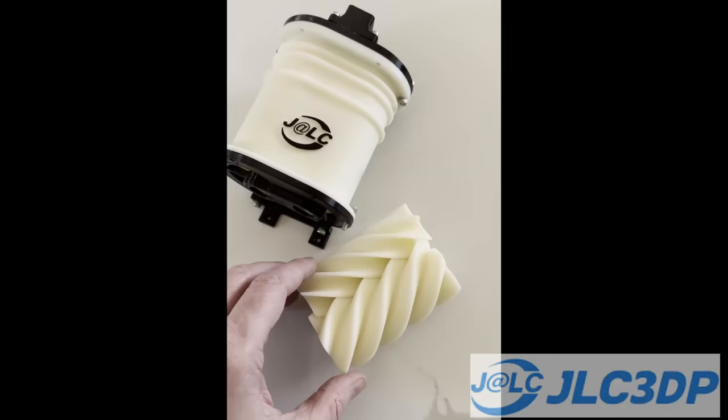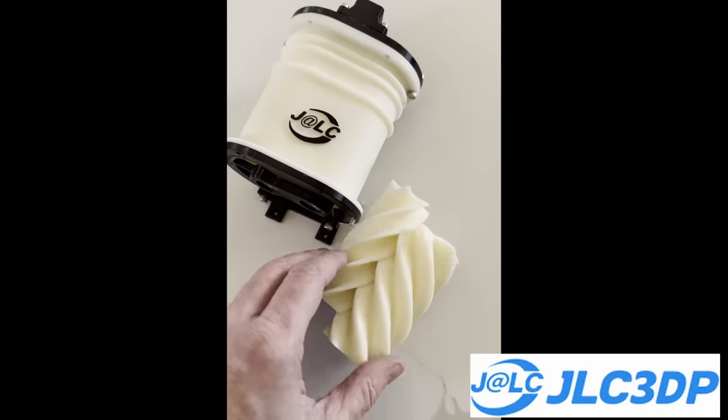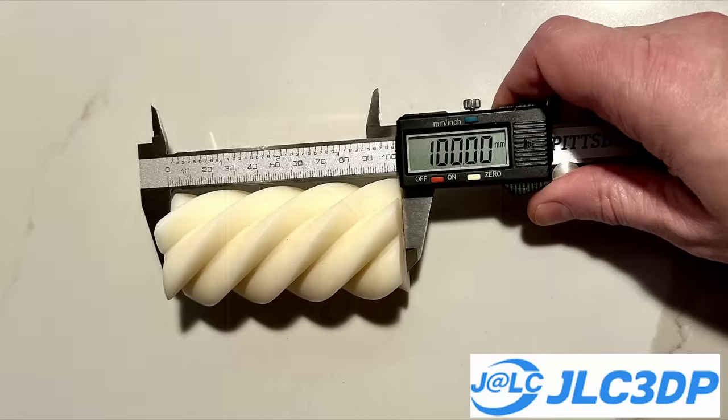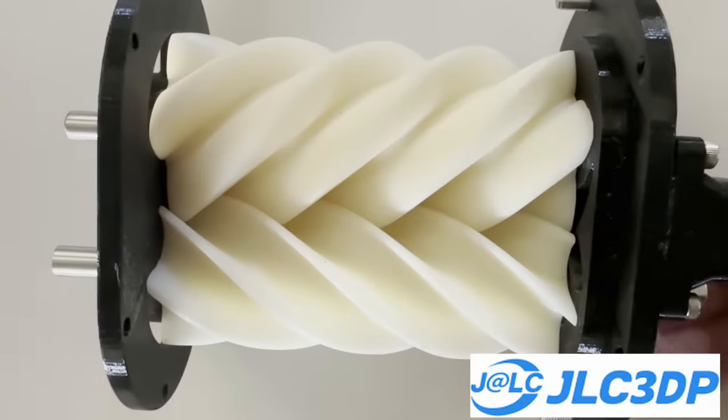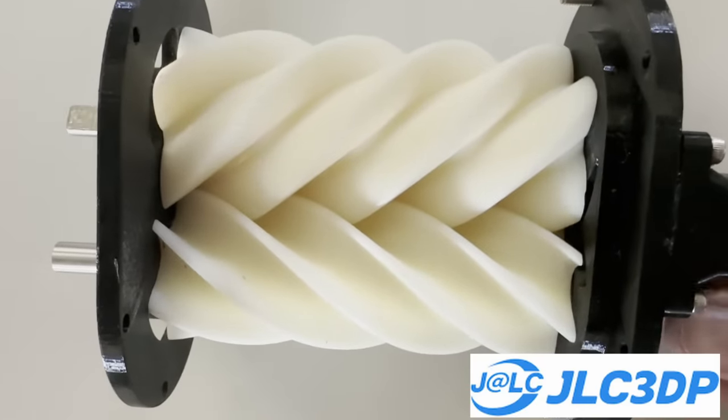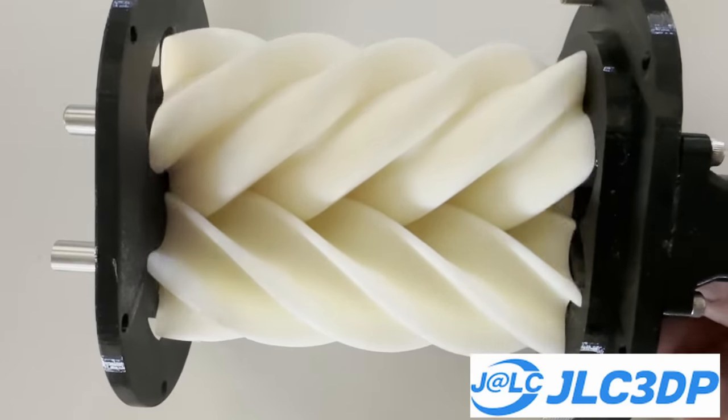JLC3DP is obviously using some industrial quality 3D printers and the parts are extremely square and round, which is far beyond what my 3D printer can achieve. If you need anything 3D printed, I highly recommend checking out JLC3DP and I'll have a link below to their website.